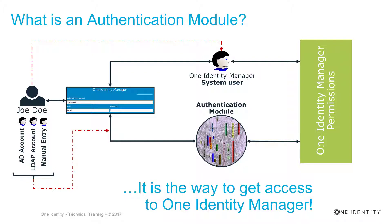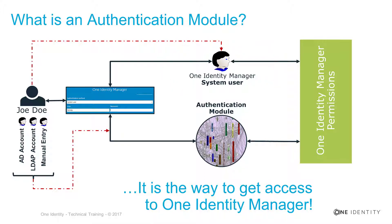Before we can start to explain in detail how authentication modules work, we have to answer one single and important question: what is an authentication module? As you can see, there is something in the identity manager called the system user. A system user is something like an identity manager account. With the help of a system user, you can get access to the One Identity Manager, similar to all other systems. You need first an account, and that account will have entitlements, which give you permissions in the specific system. In the identity manager, this concept exists as well — we call it system user.